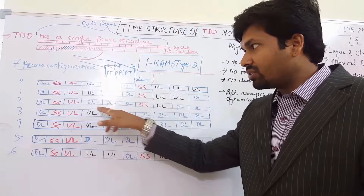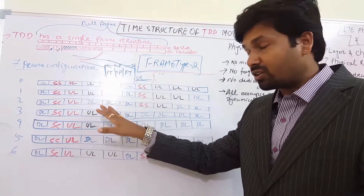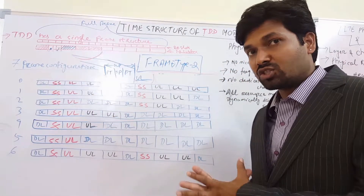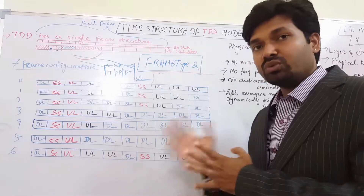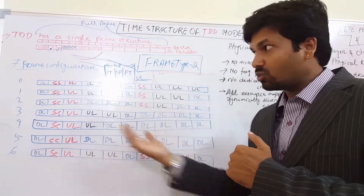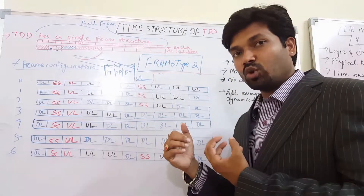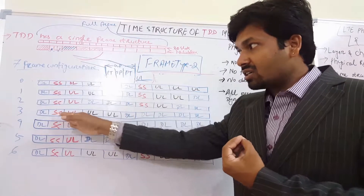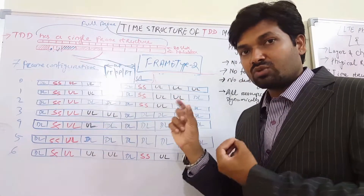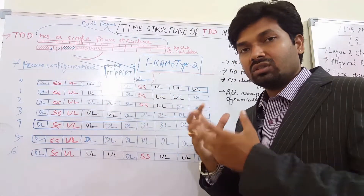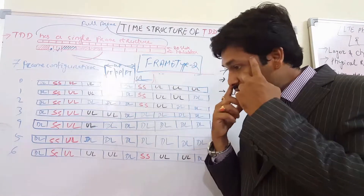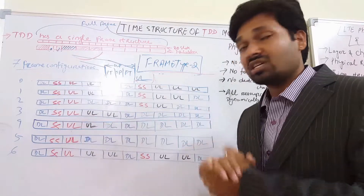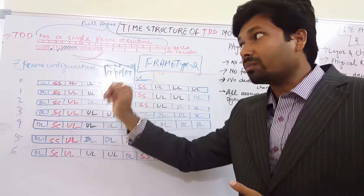From uplink to downlink, we don't need any special subframes. Only from downlink to uplink do we need a special subframe, because the UE needs to be retuned from receiver to transmitter mode. When in downlink, the receiver is in receiving mode, and when it wants to start transmission, it needs a guard period or switching time to change from receiver to transmitter. That's why we use a special subframe wherever we have a change from downlink to uplink.